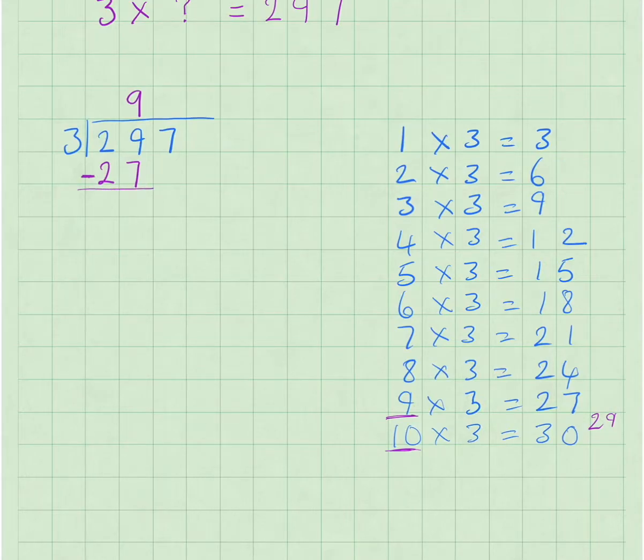So we're going to take that away. 9 minus 7 is 2, 2 from 2 is 0, and then we bring the next number down, which is 7.